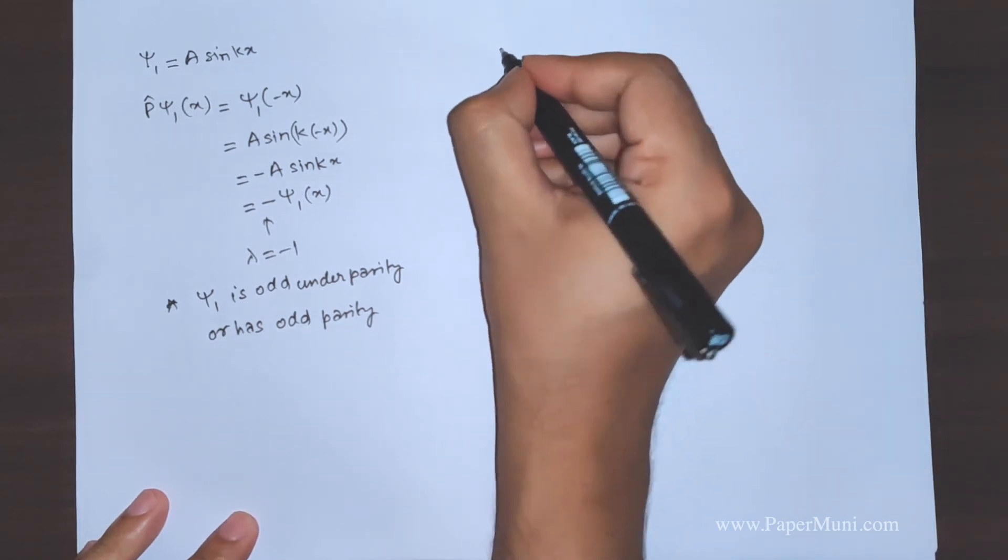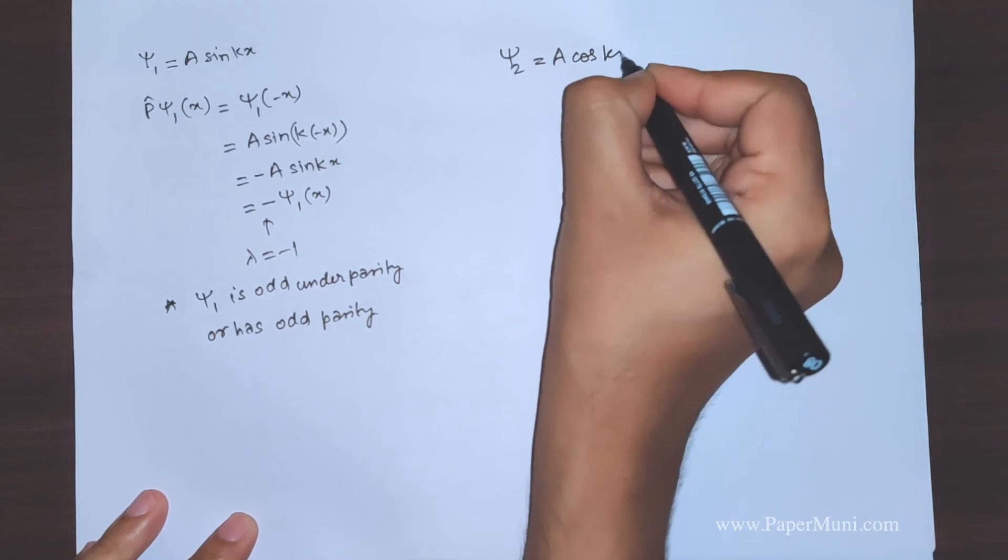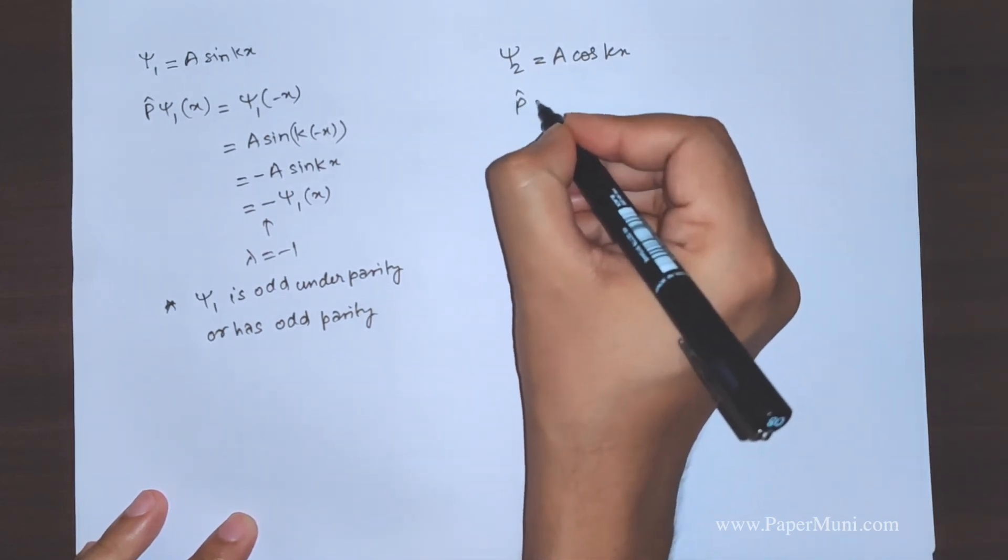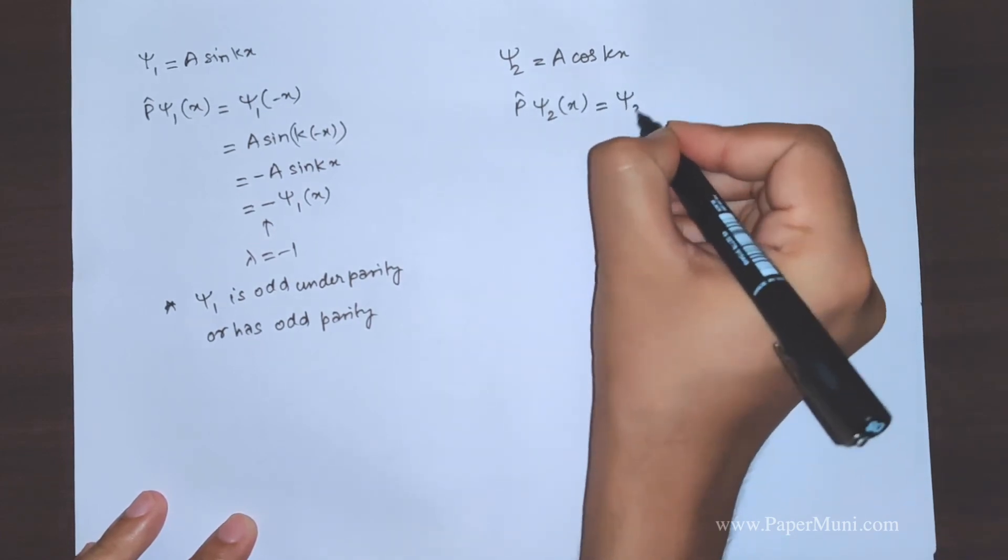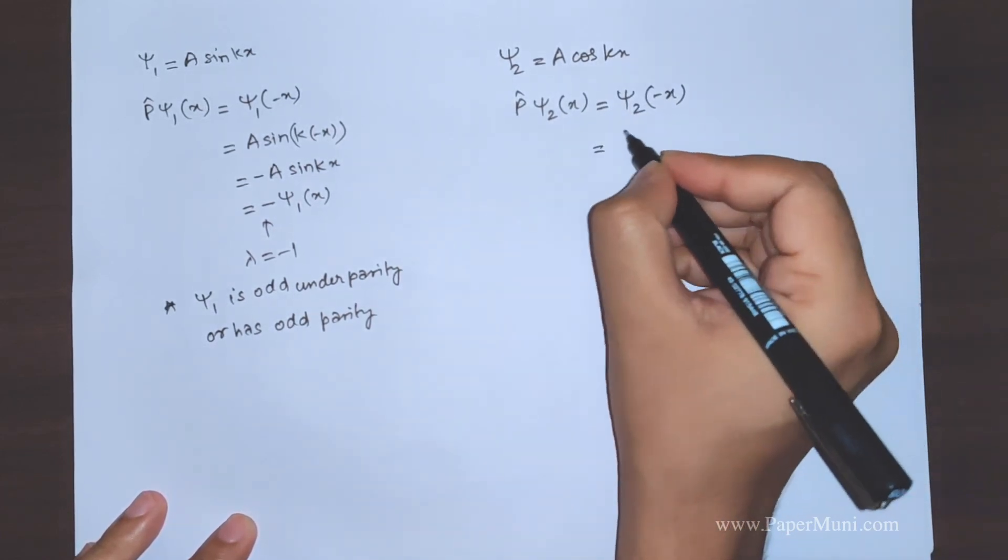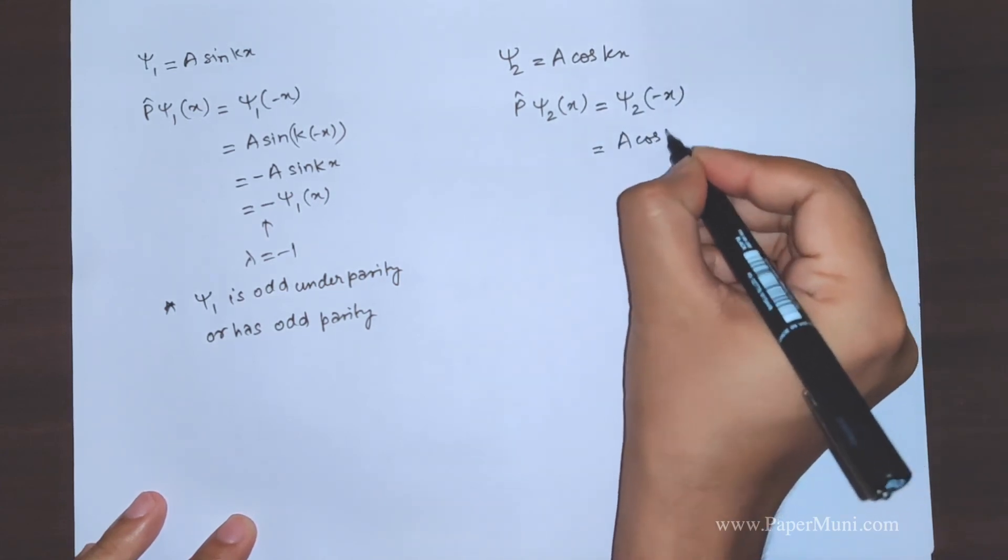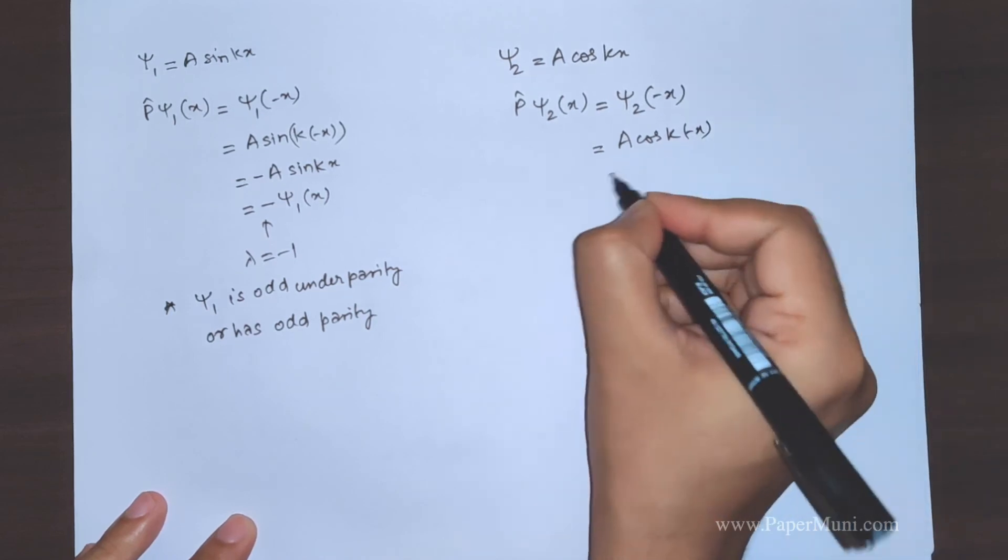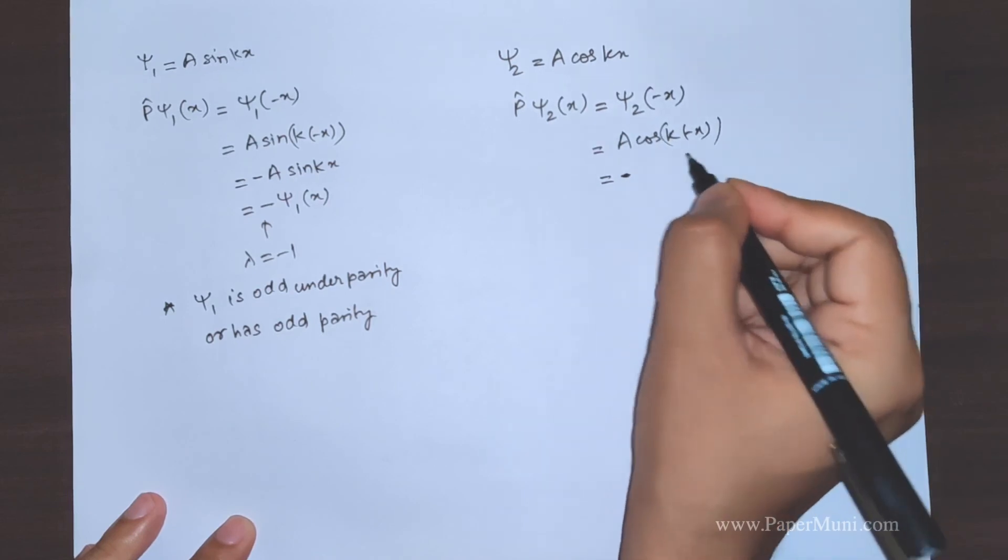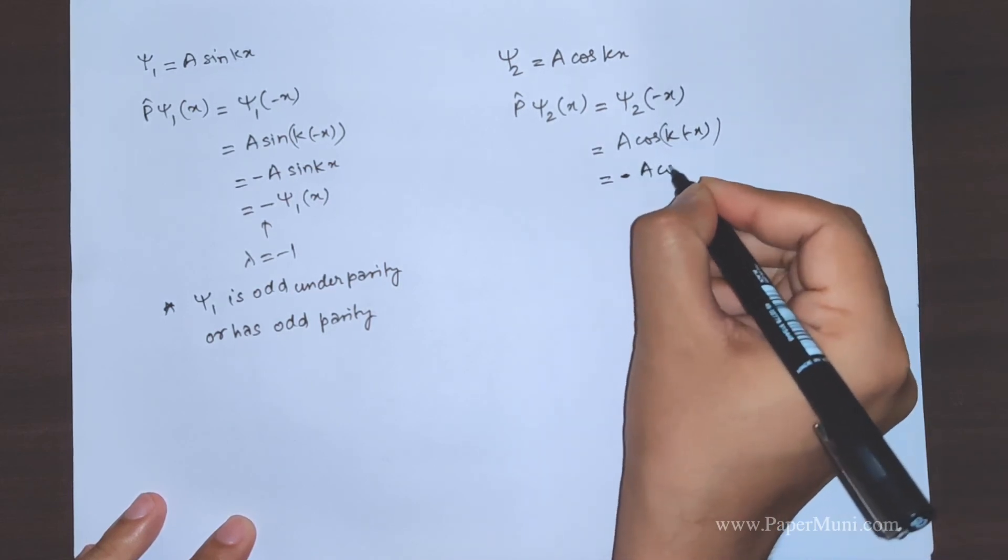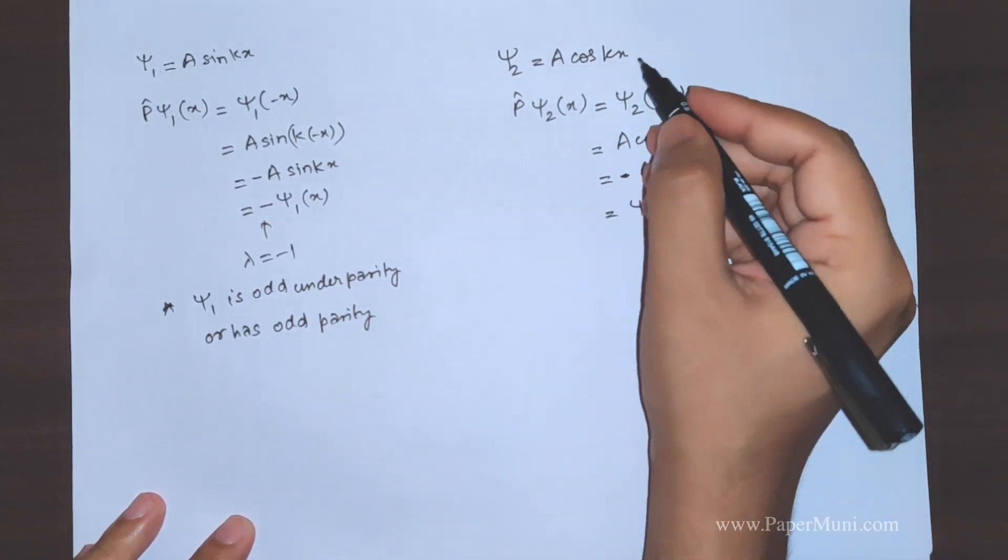Taking another example, ψ₂ = A cos(kx). P operating on ψ₂ should give us ψ₂(-x). We are replacing x by minus x. This gives you cos(-x), which is cos(x), so this gives you cos(kx). This is equal to the original function.